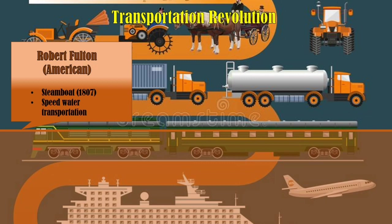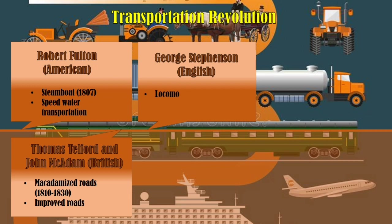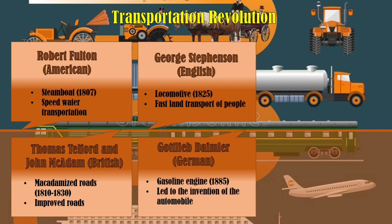This was followed by Thomas Telford and John McAdam, who were British and proposed macadamized roads from 1810 to 1830 — improved roads intended for producers of goods to market their products, buy raw materials, and for people as a means of transportation. And it was in 1825 when George Stephenson from England introduced the locomotive for faster land transport of people and goods.